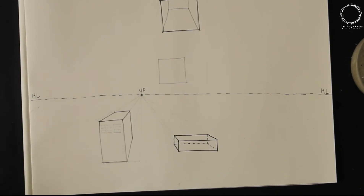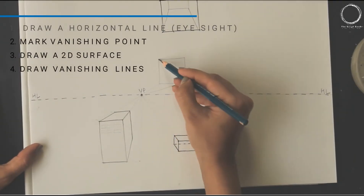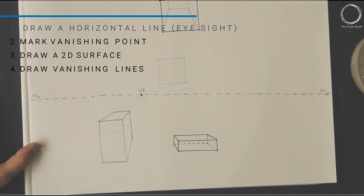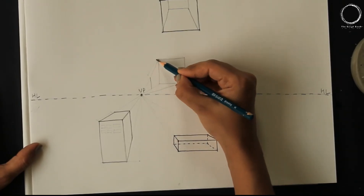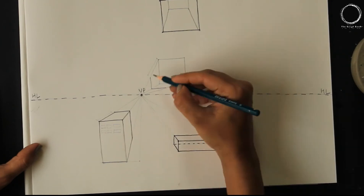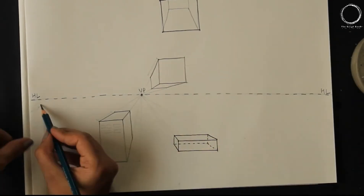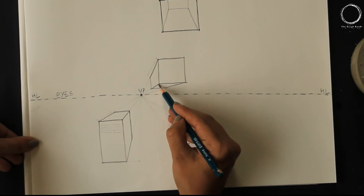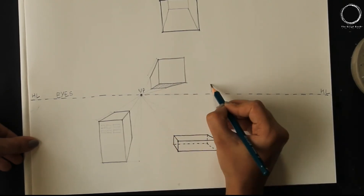The fourth step is to draw vanishing lines from all the edges of the 2D surface to the vanishing point. And the last and final step is to draw the lines according to the thickness of the object.